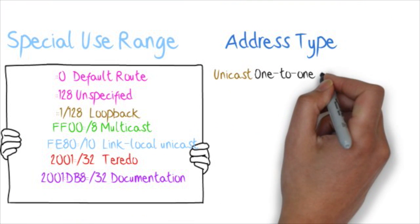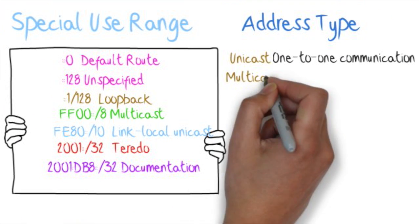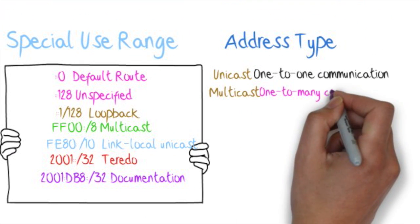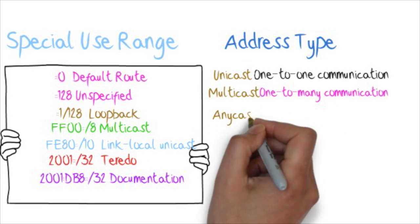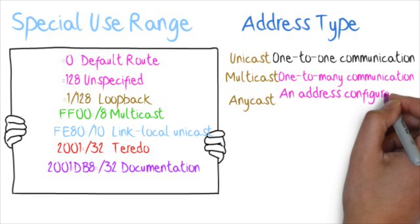In summary, the address types and their meanings: unicast refers to one-to-one communication, multicast is one-to-many communication, and anycast is an address configured at multiple locations.